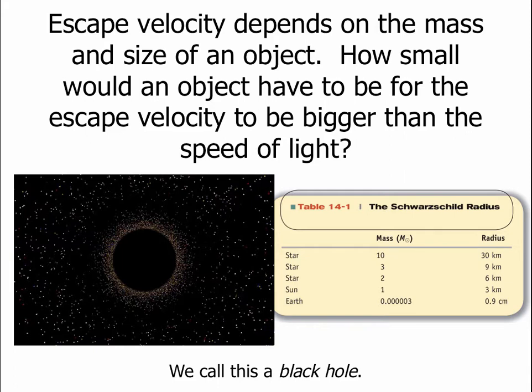then the escape velocity of the Sun would be the speed of light. In other words, since nothing can go faster than the speed of light, there would be nothing that could escape the Sun. Not even light itself could escape the Sun and not be pulled back by gravity.